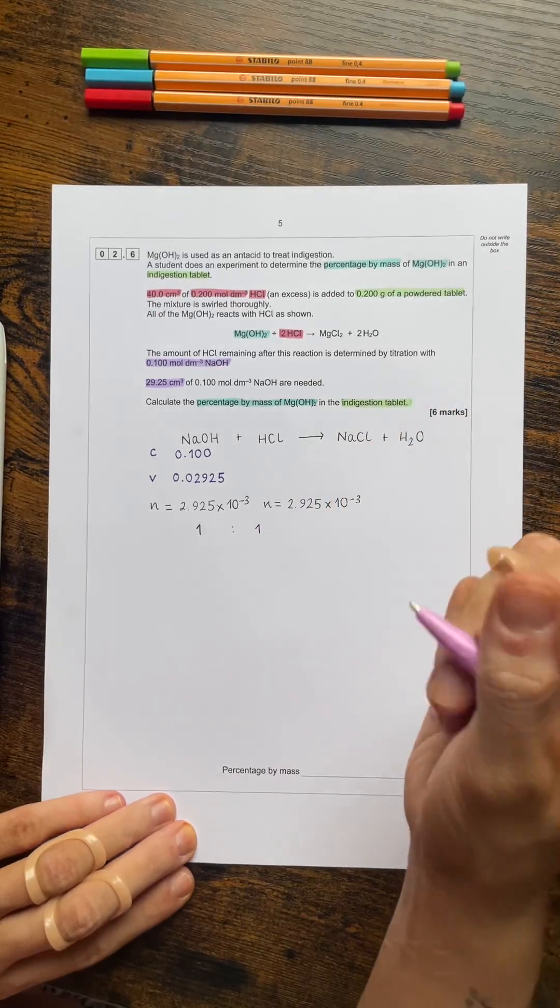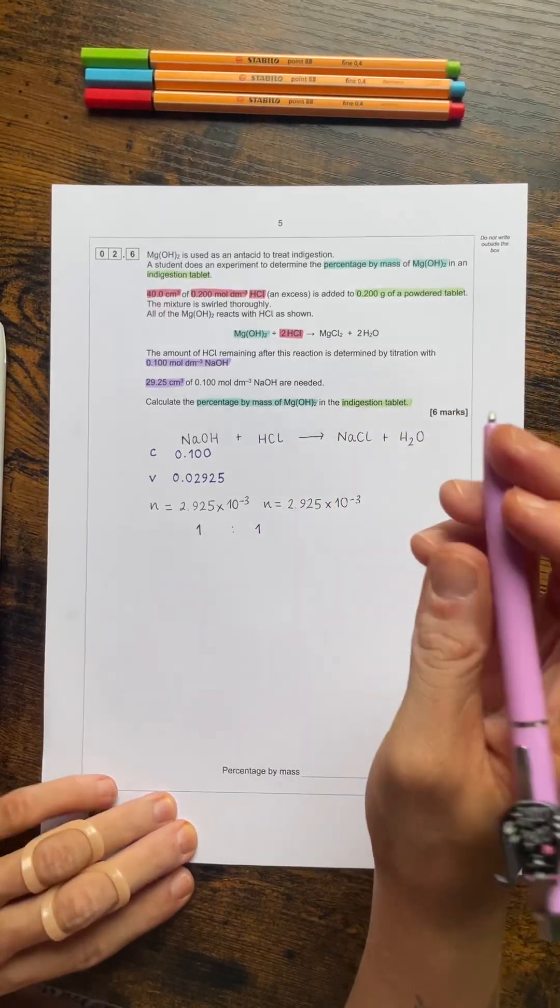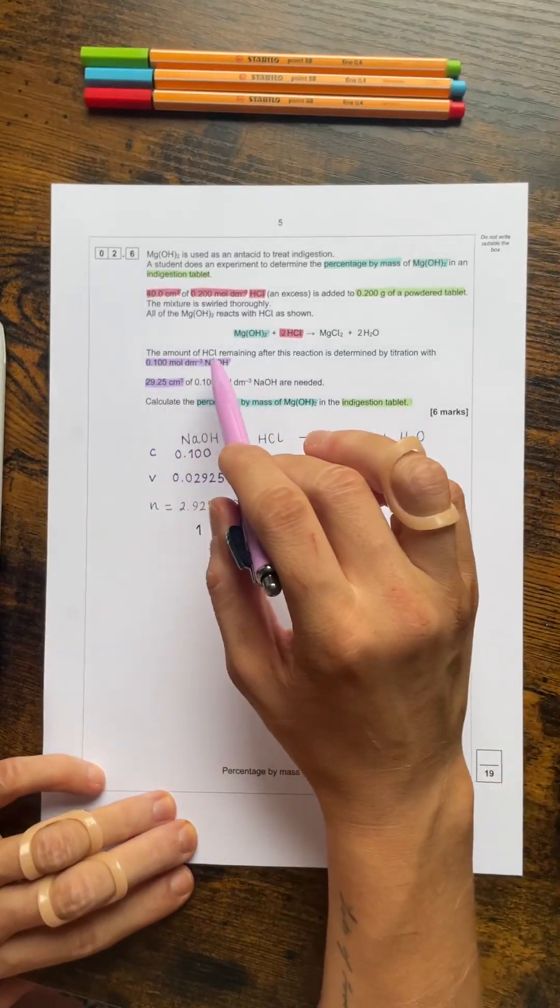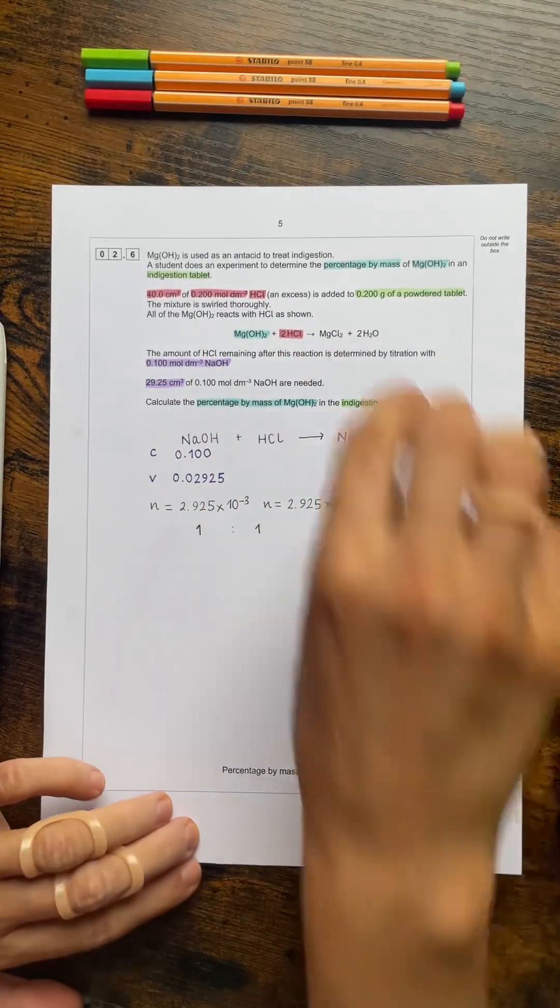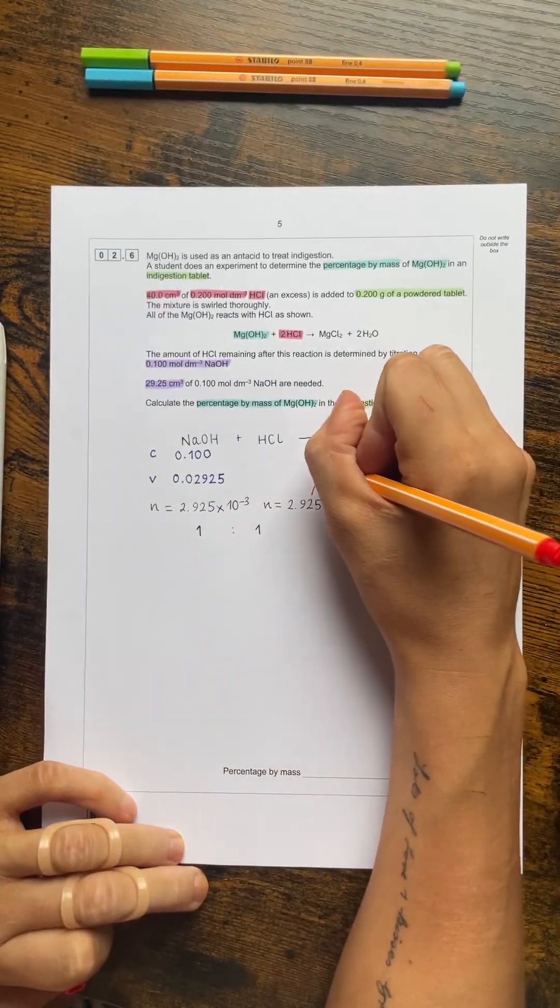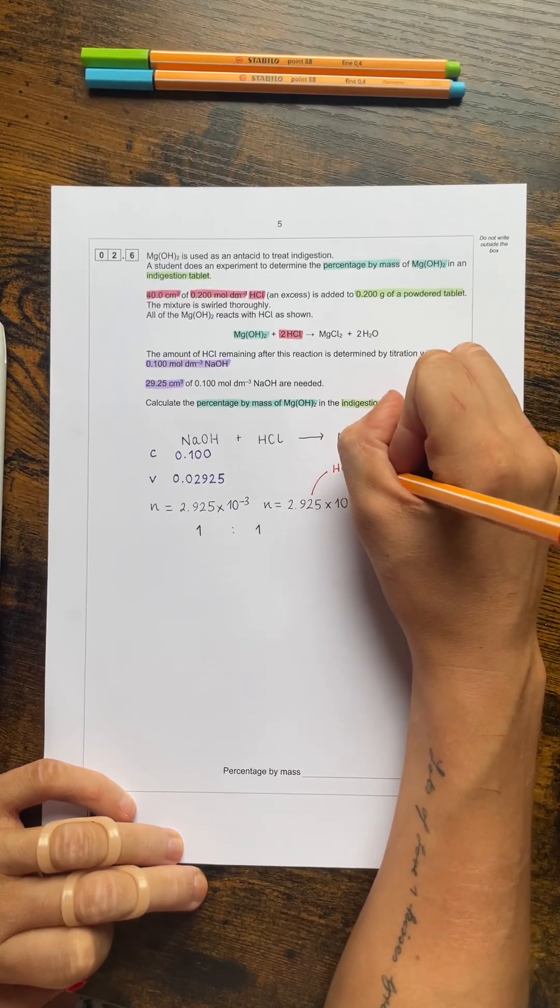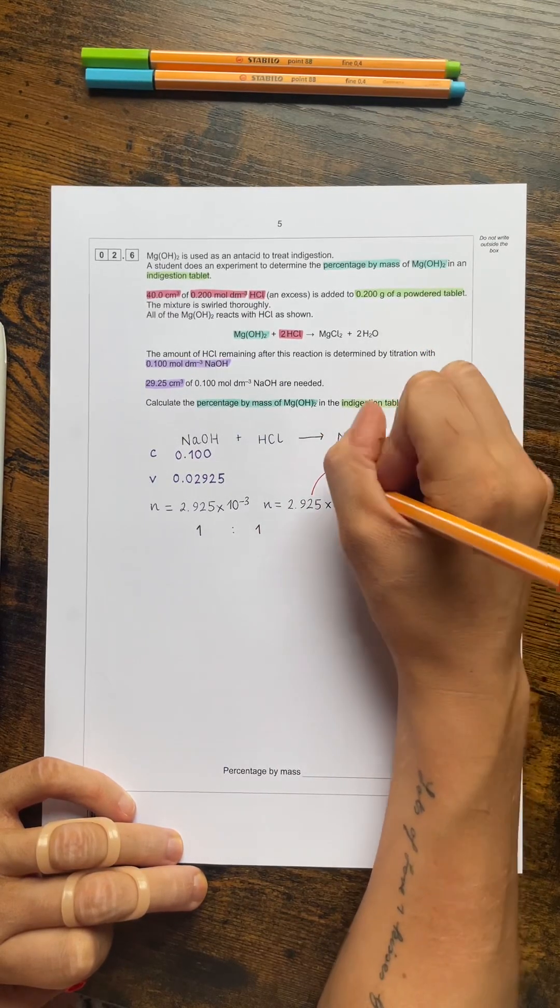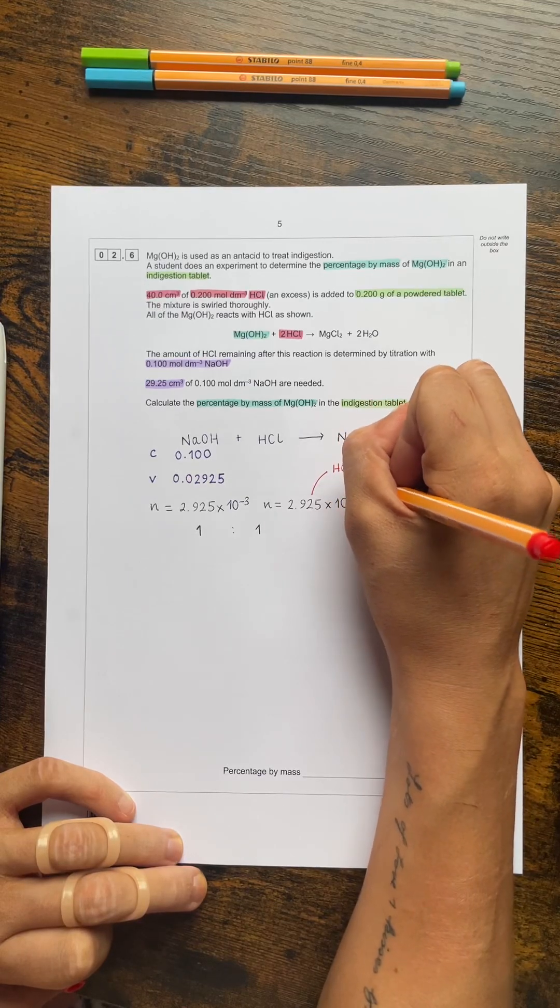Now because the ratio of NaOH and the HCl is 1 to 1, that also means that the moles of hydrochloric acid that reacted in this second reaction was 2.925 times 10 to the minus 3. So that was the amount of hydrochloric acid that was remaining and it might be helpful just to label that as such so that we don't get confused as to what that means later on. So that was the hydrochloric acid remaining after reaction 1.